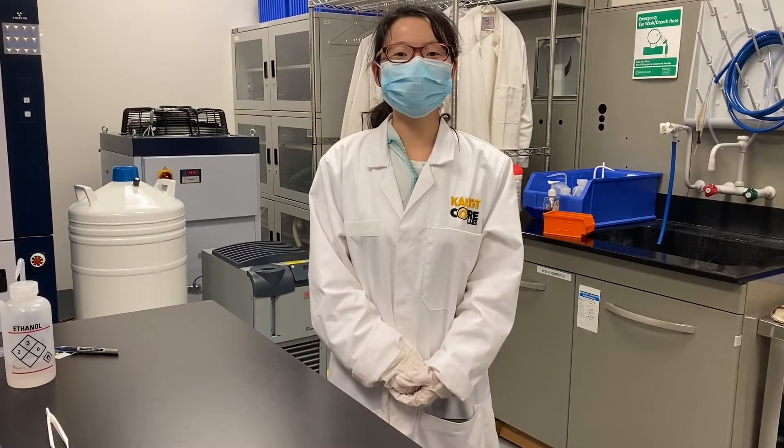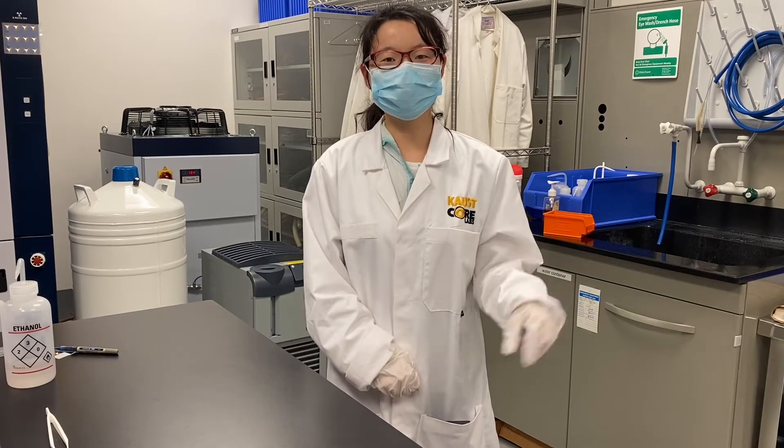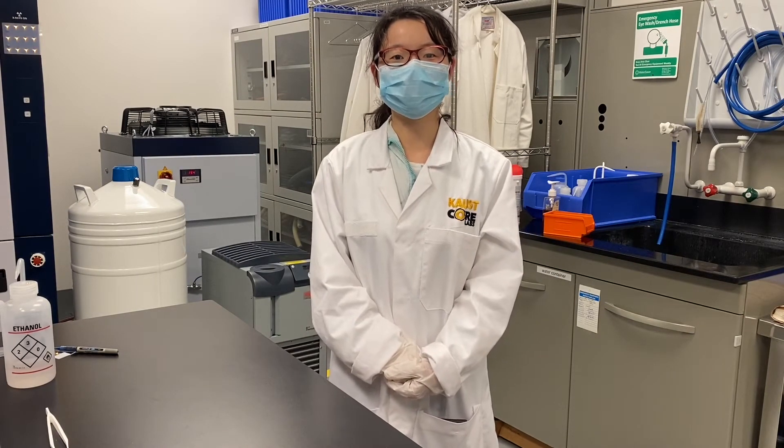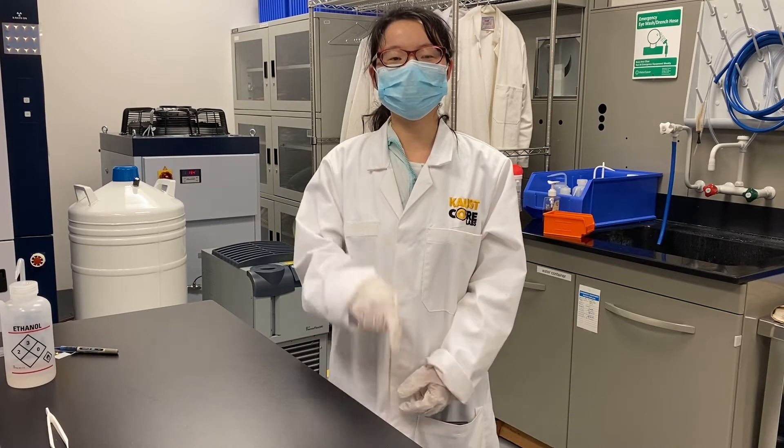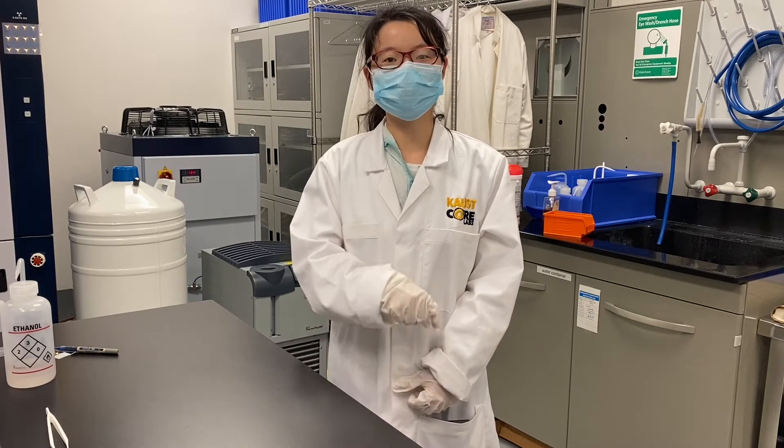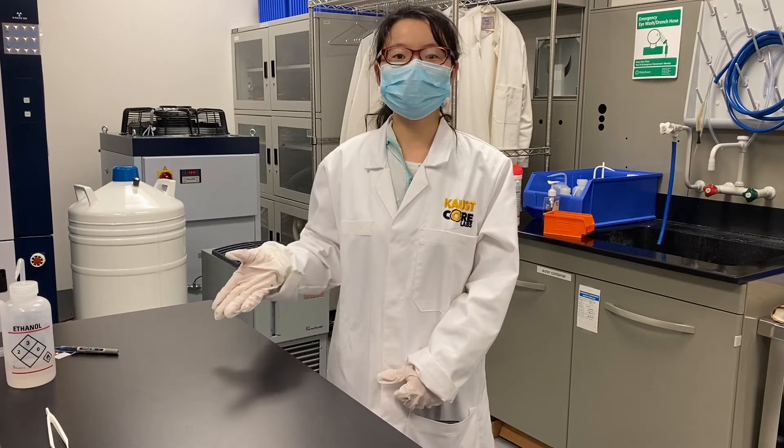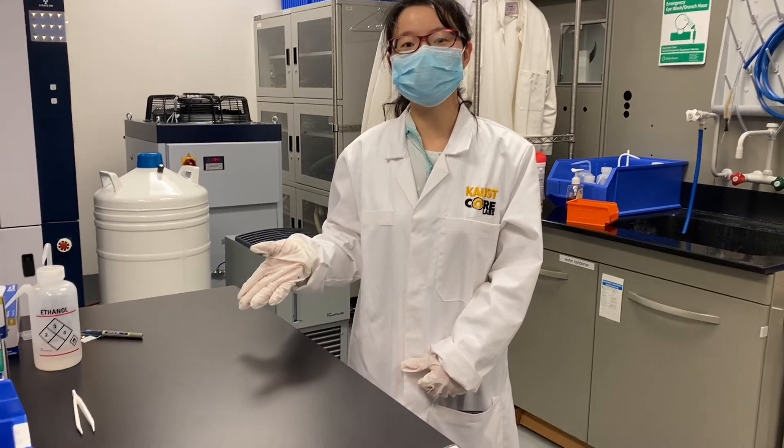Here I will show the basic quad XRD training on Bruker D2 Phaser. We have two XRD rooms, one is 337 and one is 336. The machine we will give training in D2 Phaser which is located in 337, and this is our sample preparation area.